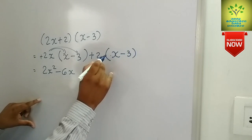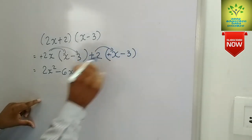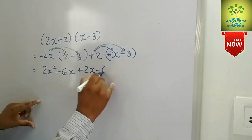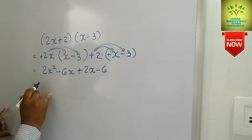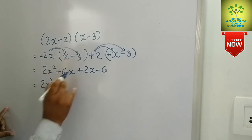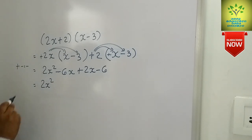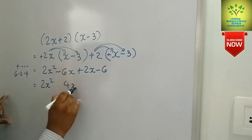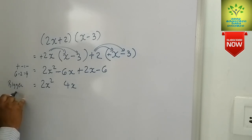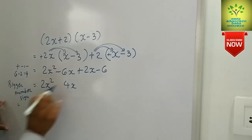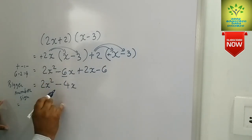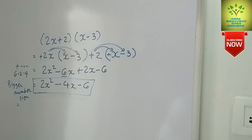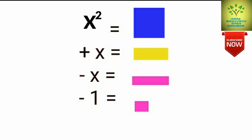Now we multiply plus 2 by x to get plus 2x, and 2 times minus 3 gives minus 6. Combining like terms: minus 6x plus 2x — since 6 is larger and carries a minus sign, we get minus 4x. So the final answer is 2x squared minus 4x minus 6.